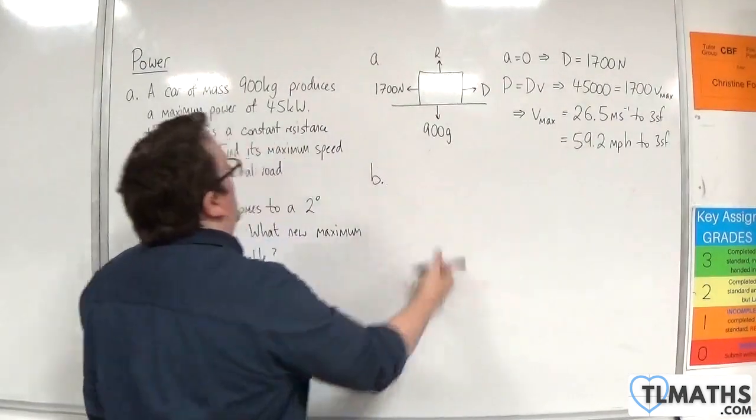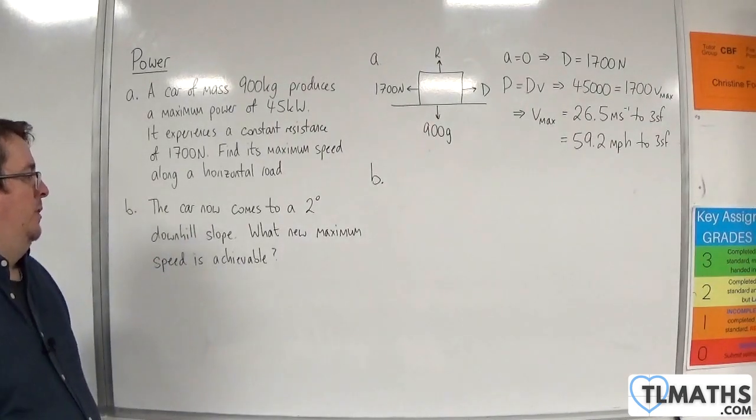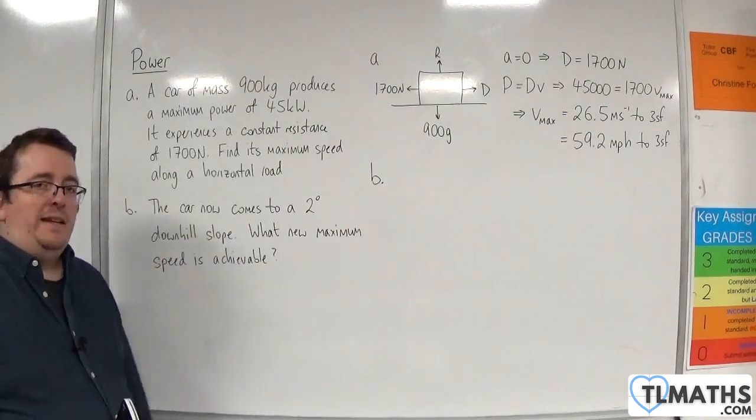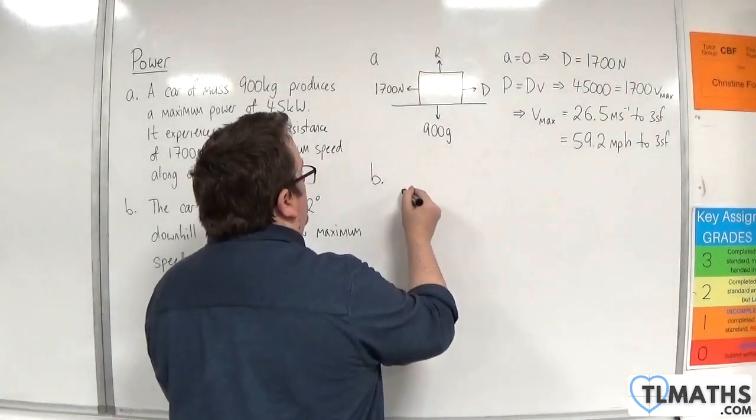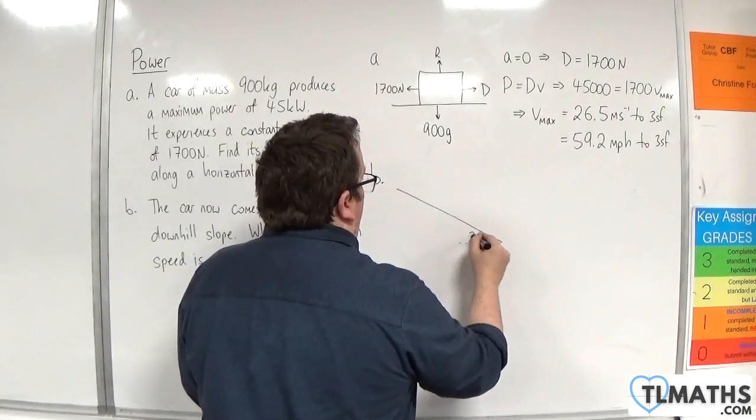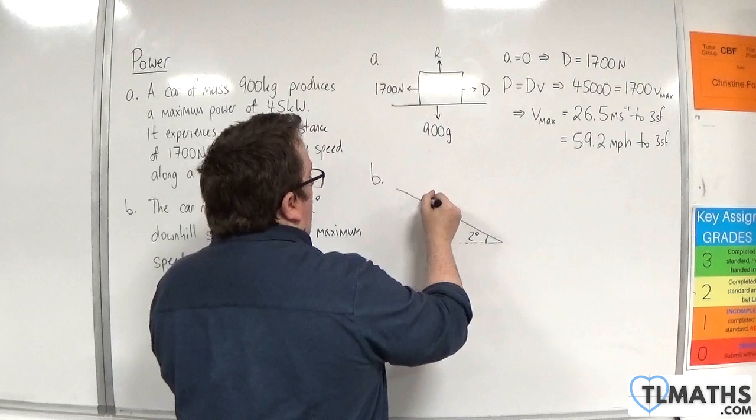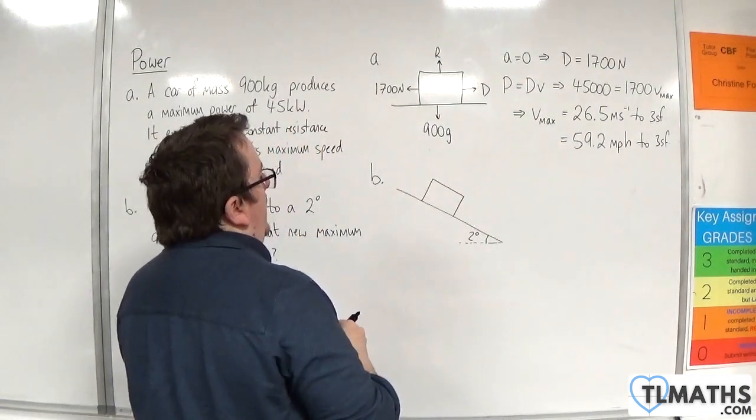Right. Part B. The car now comes to a two degree downhill slope. What new maximum speed is achievable? So let's draw a diagram. Here is my slope. That's meant to be two degrees. Here is my car.